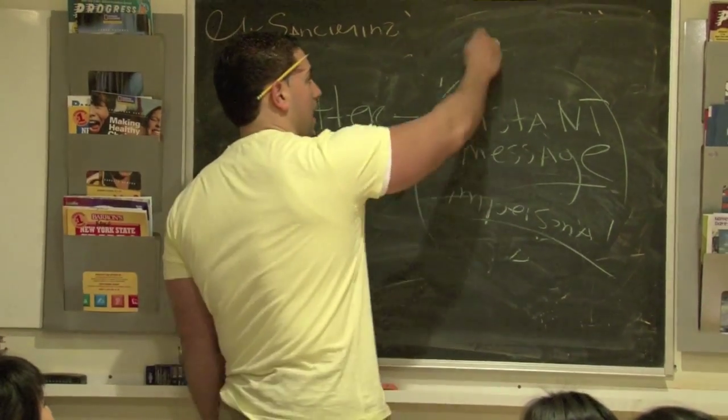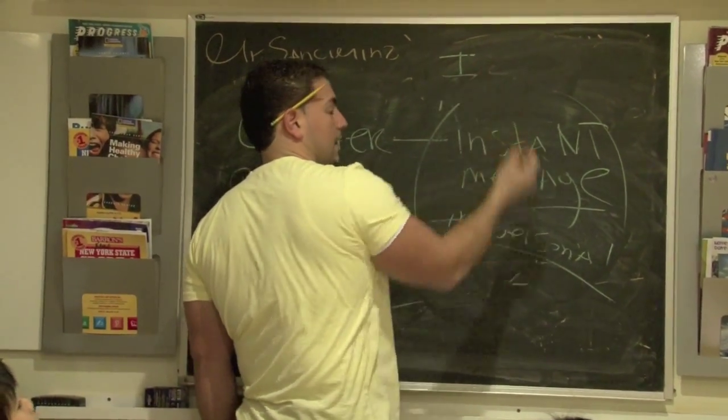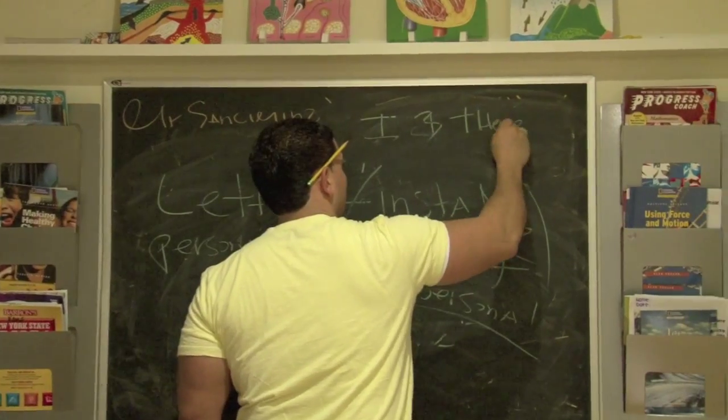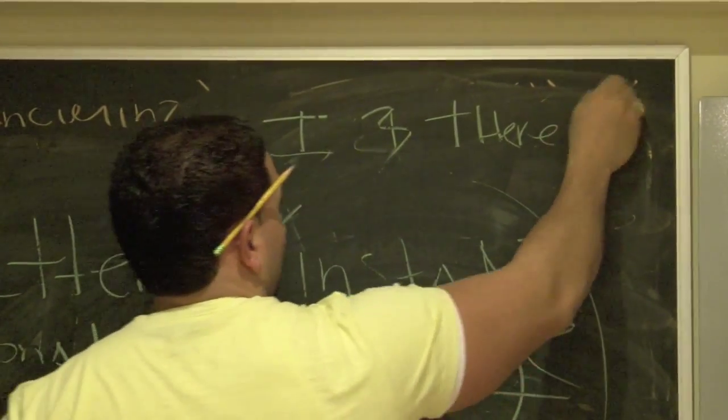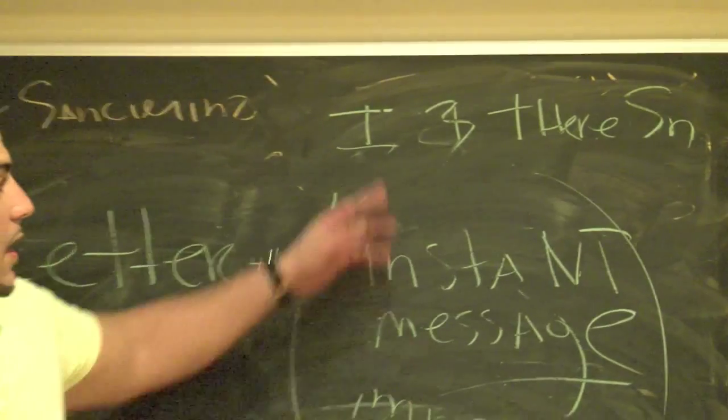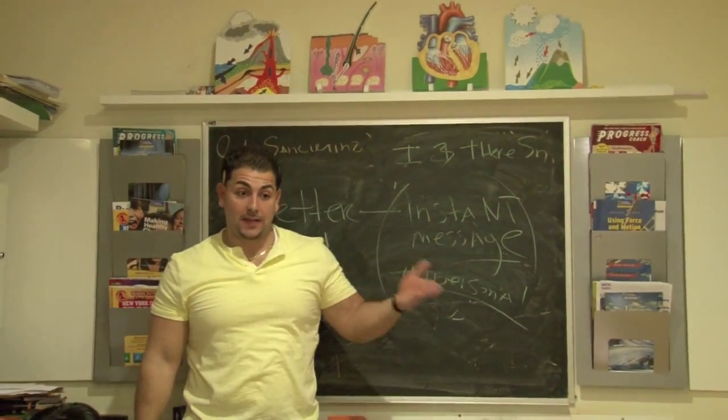I. Space. And then B. There. D-H-E-R-E. And then instead of saying soon, you write S-N. And that translates into, I'll be there soon, right?